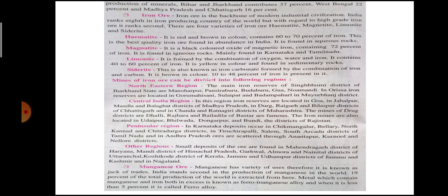Limonite is formed by the combination of oxygen, water and iron. It contains 40 to 60% iron. It is yellow in color and found in sedimentary rocks.